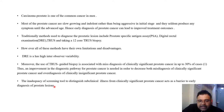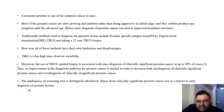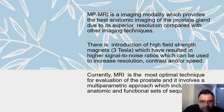The inadequacy of screening tools to distinguish subclinical illness from clinically significant prostate cancer always acts as a barrier to the early diagnosis of the prostate lesion. Multi-parametric MRI is the imaging modality which provides the best anatomic imaging of the prostate gland due to its superior resolution compared with other imaging techniques.